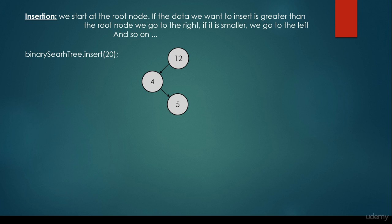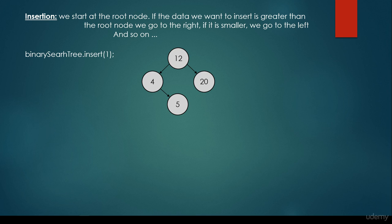What if we would like to insert 20? It's greater than 12, so we go to the right. But because 12 doesn't have any right child, 20 is going to be its right child. What about inserting 1? It's smaller than the root node, so we go to the left. It's smaller than 4, so we go to the left, and we insert 1 there.